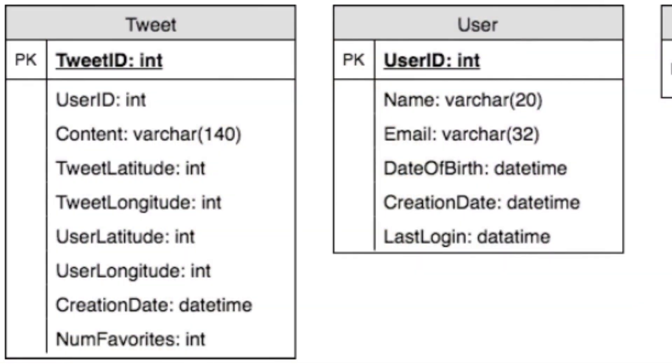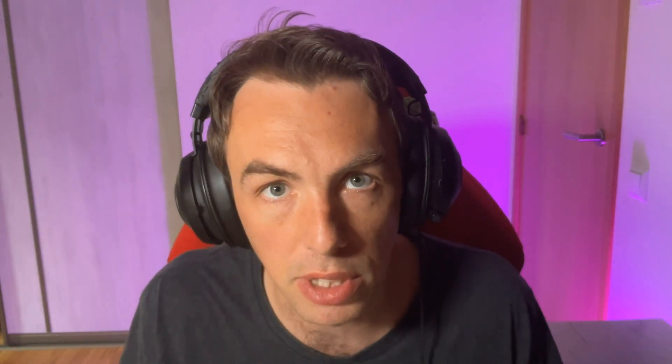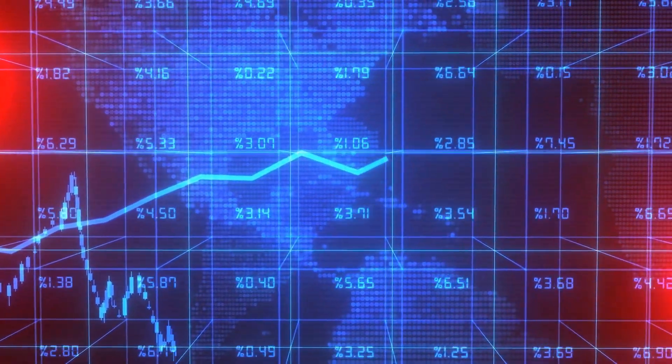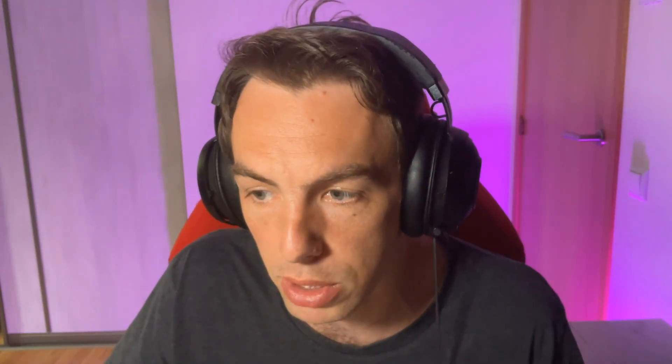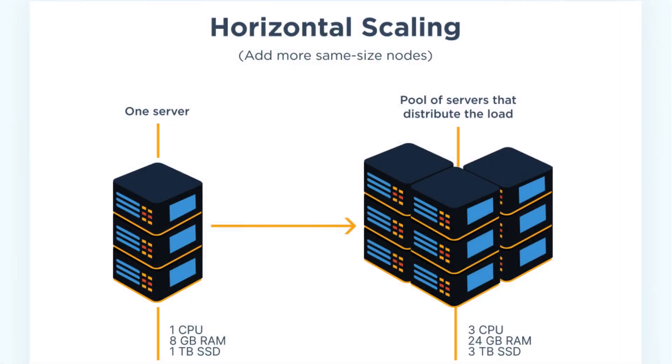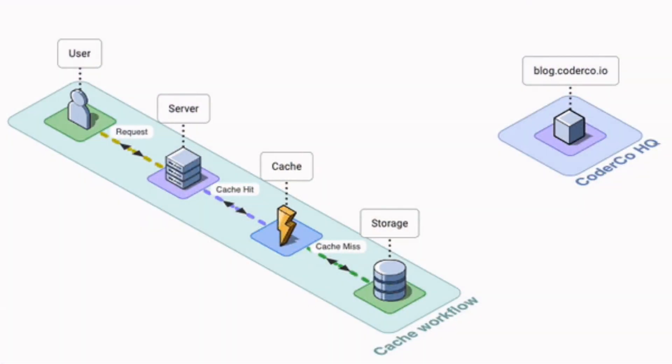Show how you would store and serve the tweets at a basic level. Then ask: what happens if the amount of tweets is not in the thousands or millions, but actually in the billions? Then there will be performance problems — we need to shard the database, apply horizontal scaling for compute, cache data that should be served as fast as possible, and leverage caching at different levels. Make the transition from a very simple design to more sophisticated ones.